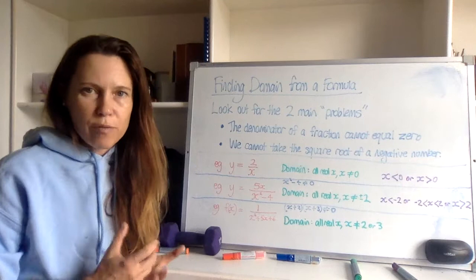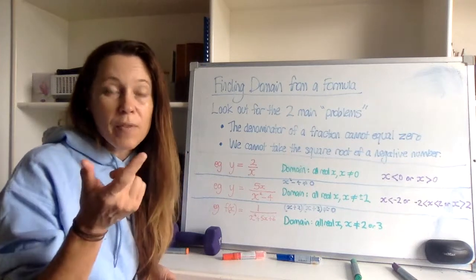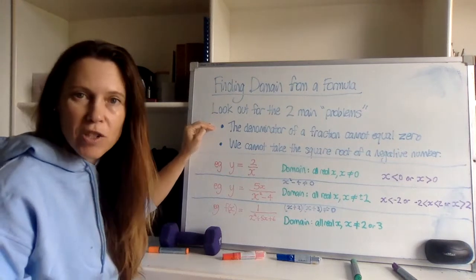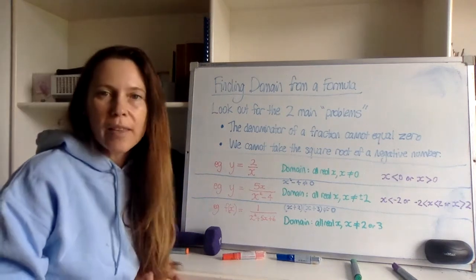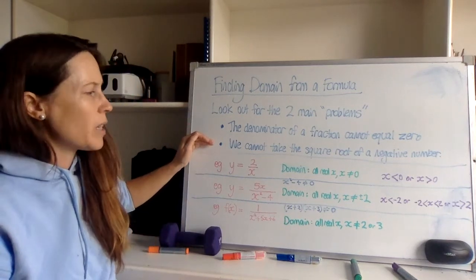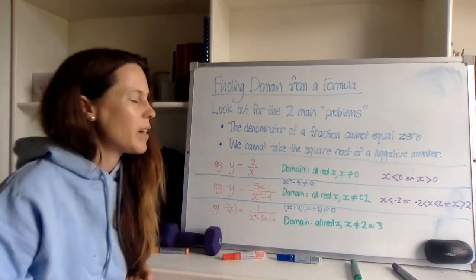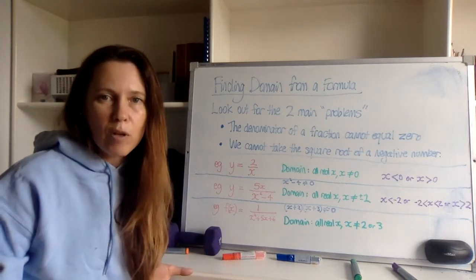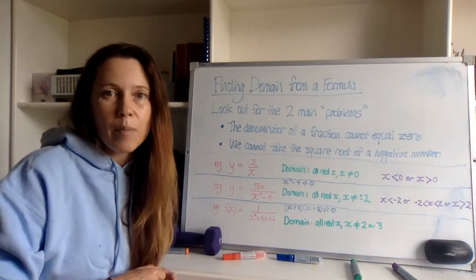Now if you're looking to find the domain from the formula, you're basically looking out for two potential problems. You might have one or the other of them or even both in your formula. One problem is that the denominator of a fraction can never equal zero. We can't ever divide by zero, it's just mathematically impossible. The other thing we can't do is we can't take the square root of a negative number, at least not in this course, that gives us imaginary numbers. Looking out for these two problems really helps us to find the values of x that won't be possible, and if we find those, we can reason that all the other values of x are possible except for those ones.